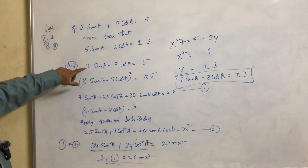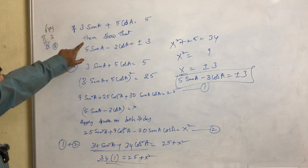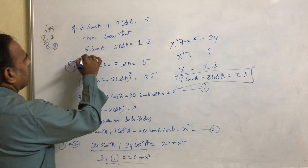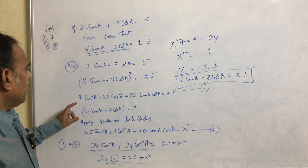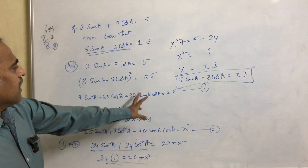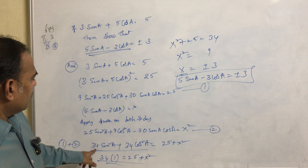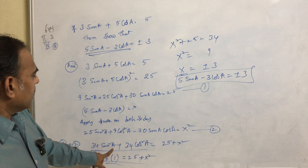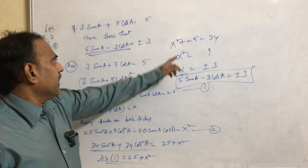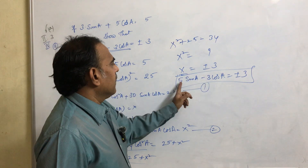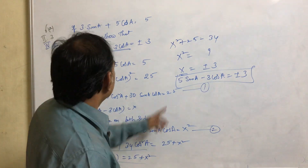The steps are: first, take what is given and apply square on both sides. Then take what we need to show, take the LHS and assume its value is X. Apply square on both sides. Add equation 1 and 2 to remove the 30sinAcosA term. We are left with 34sin²A plus 34cos²A equals 25 plus X², giving X² equals 9, X equals plus or minus 3, which is what we needed to show.